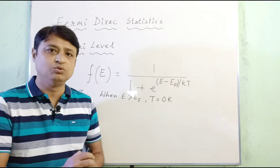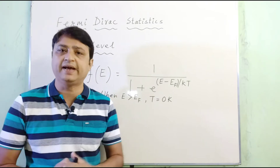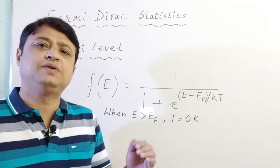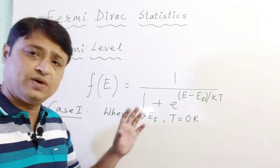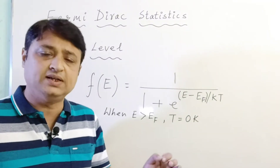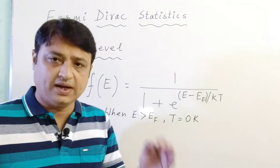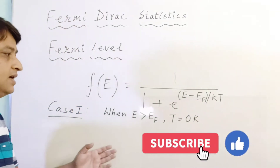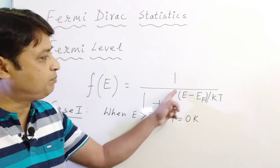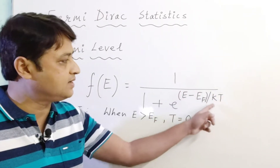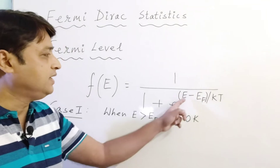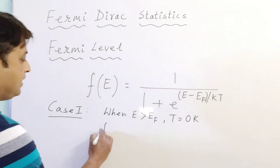Let's calculate f(E) for three different cases. Case 1: when E is greater than Ef. Consider an energy level E which is at a higher energy than Ef, and assume the semiconductor is kept at T = 0 Kelvin. Substituting T = 0, the exponent (E - Ef) / kT becomes positive infinity since E > Ef, giving e^(+∞).